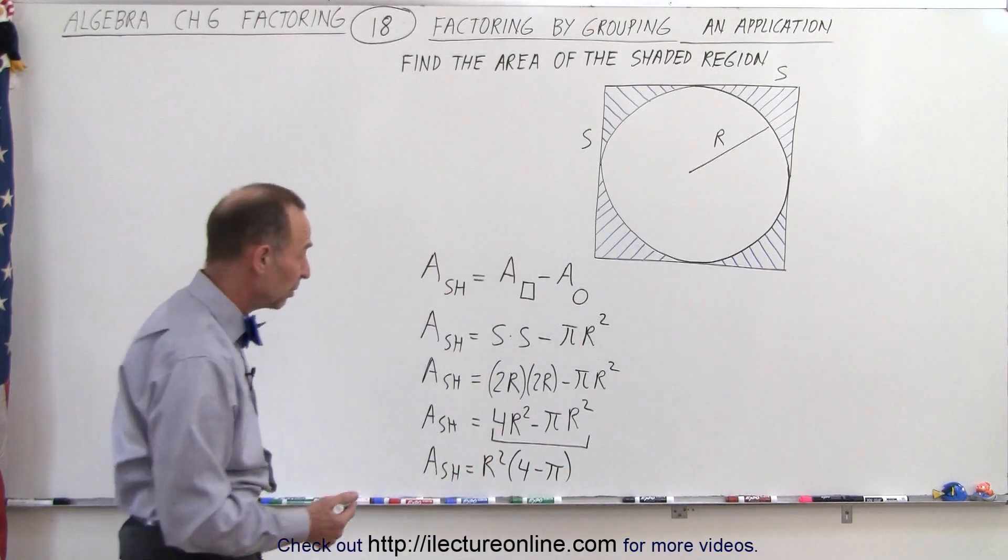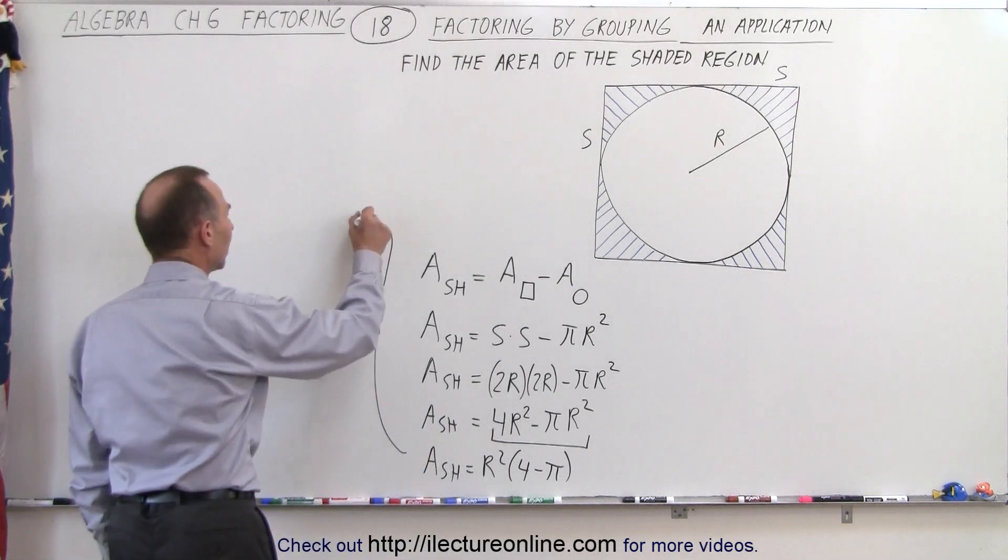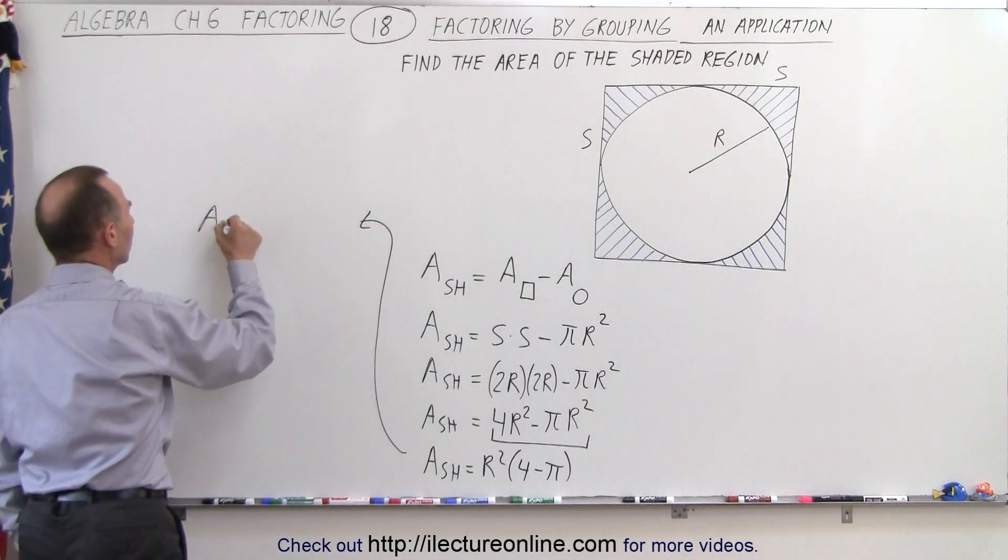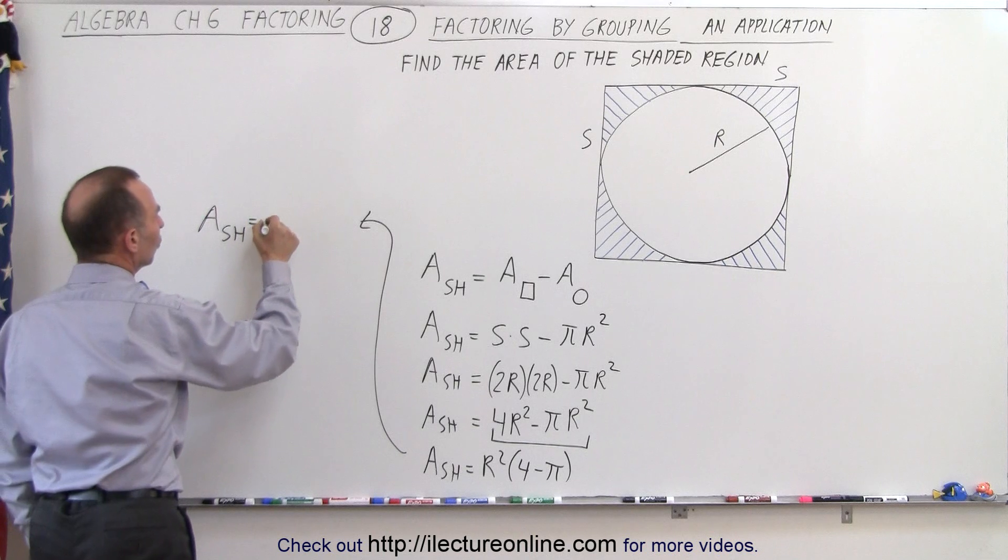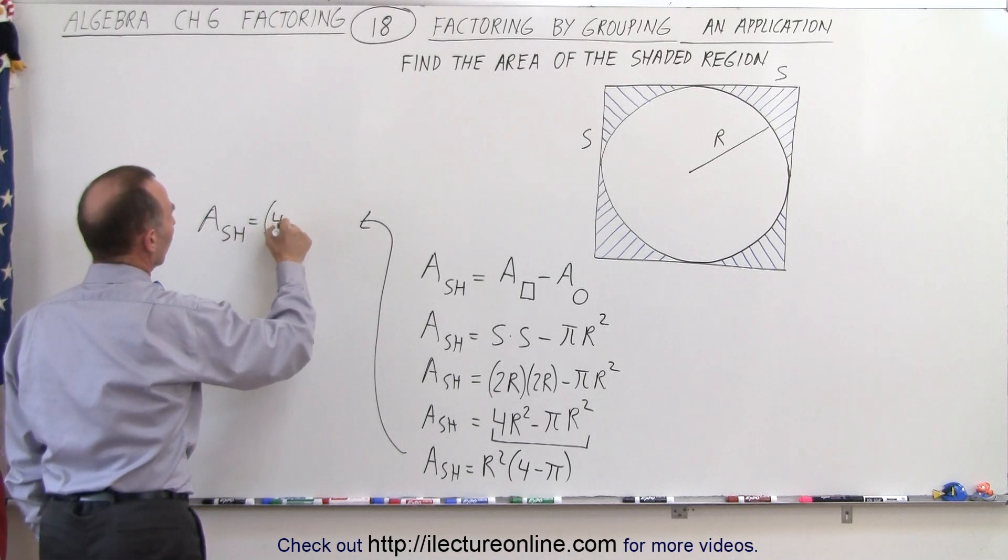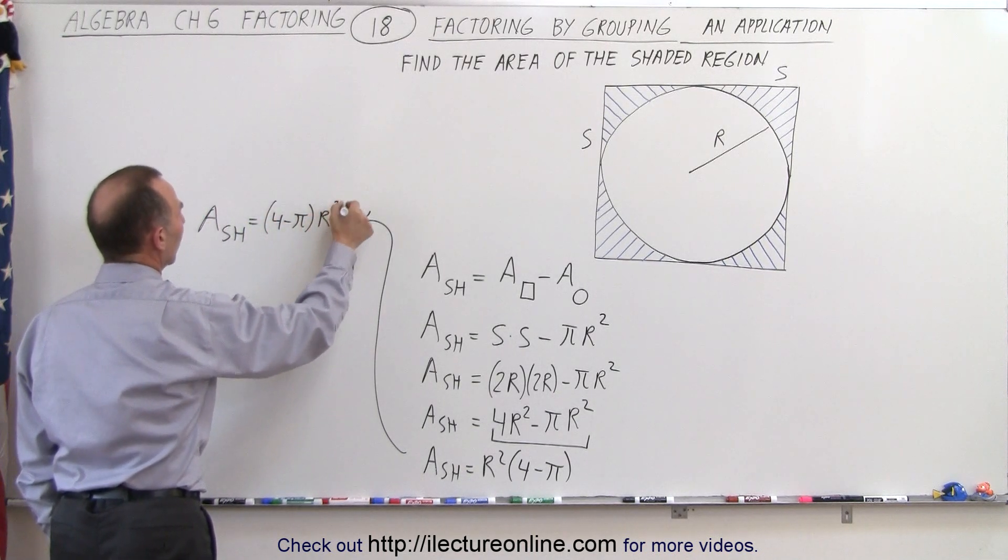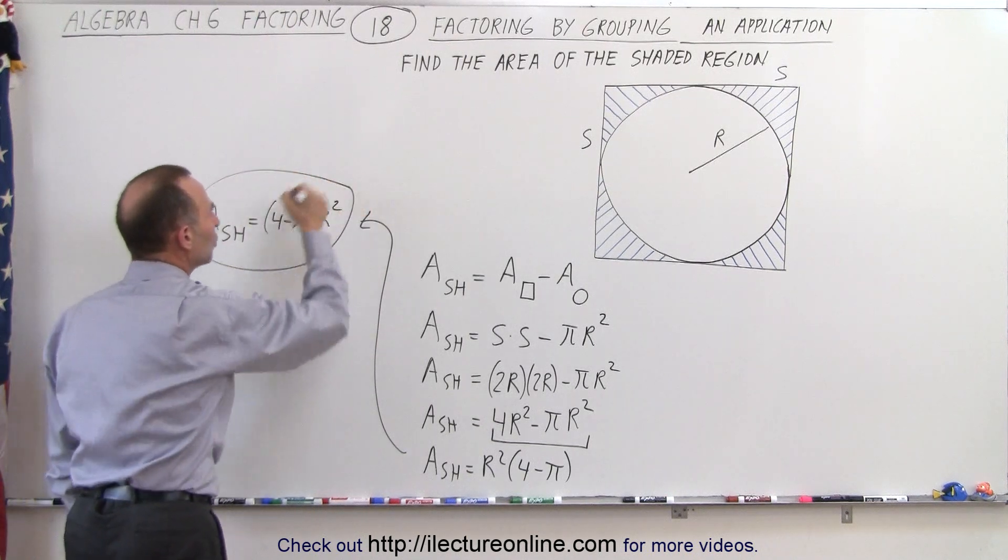Or sometimes 4 minus pi would be written first. So we can say that the area of the shaded region is equal to the quantity 4 minus pi times R squared. And that's how we do that.